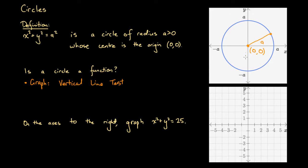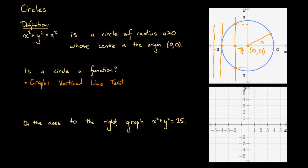We can pick any point and draw a vertical line, then ask: do we get one, two, or zero intersections with the curve? For this vertical line we get zero. For this one we get one. However, for this vertical line we get two intersections, which means that for this x value — about minus a over two, halfway between minus a and the origin — if we input that value, we actually get two associated y values.